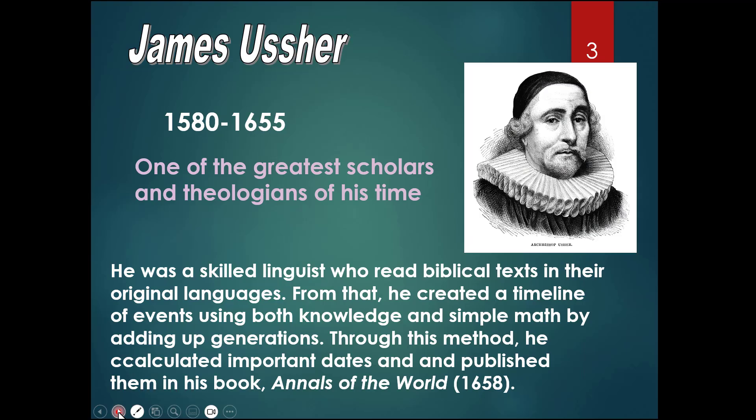This is time before absolute age dating, which we do right now. So the first person we have to mention is James Ussher. James Ussher lived between 1580 and 1655 — about 75 years. He was one of the greatest scholars and theologians of his time. He was a skilled linguist, so he could read the Bible and biblical texts in the original language, which is biblical Hebrew. Being able to read the biblical text helped him to create a timeline of events using both knowledge and simple math, basically using genealogy to calculate important dates. He then published those important dates in his book called Annals of the World, published in 1658.